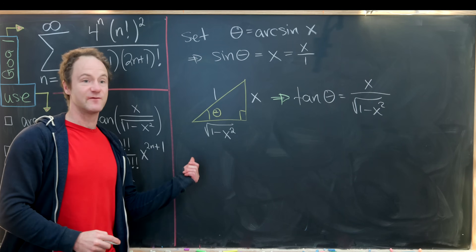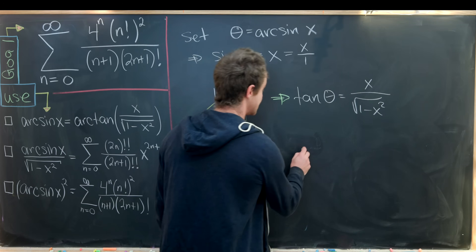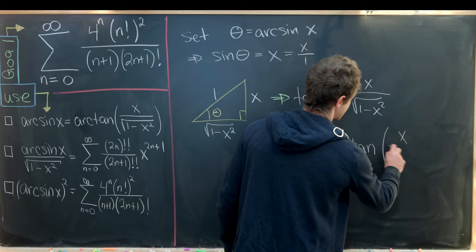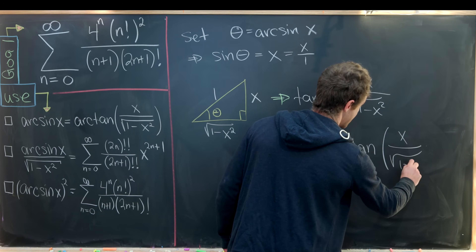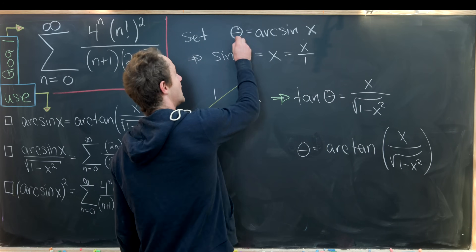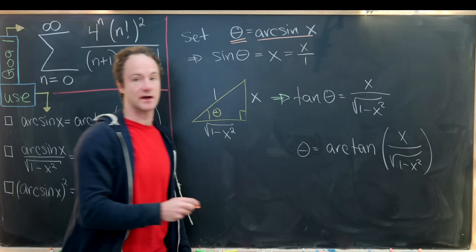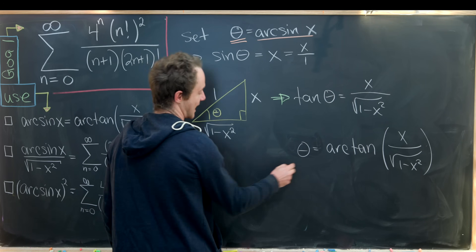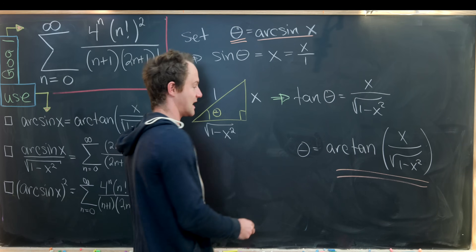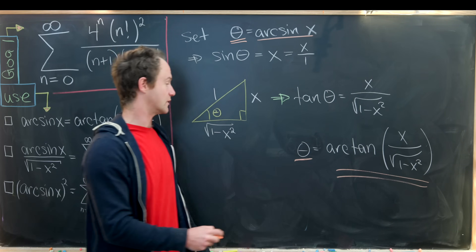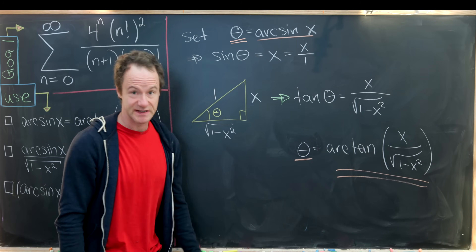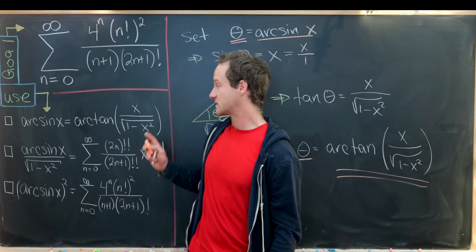By the inverse function relationship, θ = arctan(x/√(1 - x²)). On one hand θ equals arcsin(x), and on the other hand θ equals arctan(x/√(1 - x²)). So the inverse sine equals this inverse tangent expression, and we have proved our first tool.